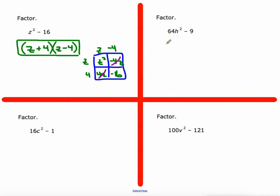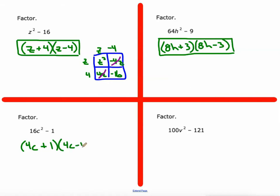Perfect square minus the perfect square. We have the difference of squares so square root of 64h squared is 8h, square root of 9 is 3. So we write this as 8h plus 3 times 8h minus 3. That's the factorization. Perfect square minus a perfect square here. Square root of 16c squared is 4c, square root of 1 is 1. So sum and difference pattern, 4c plus 1 times 4c minus 1.